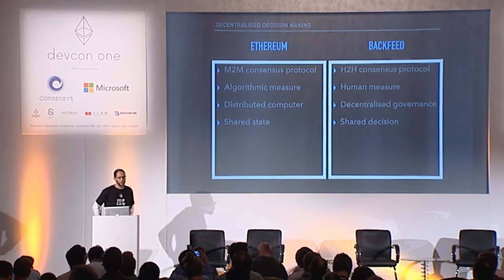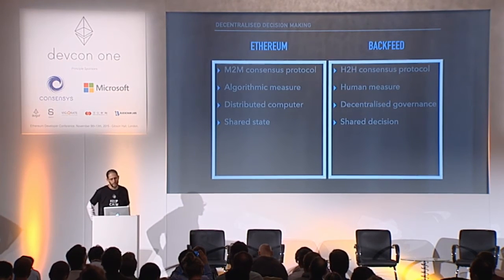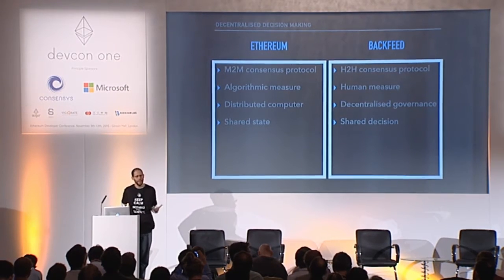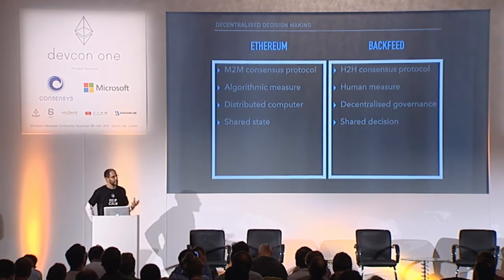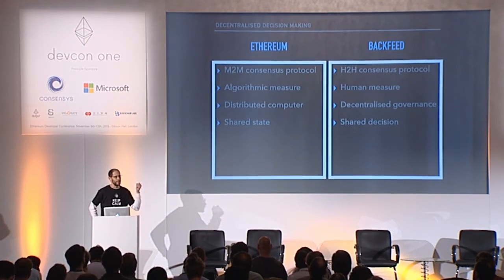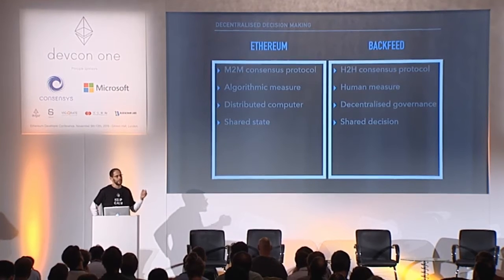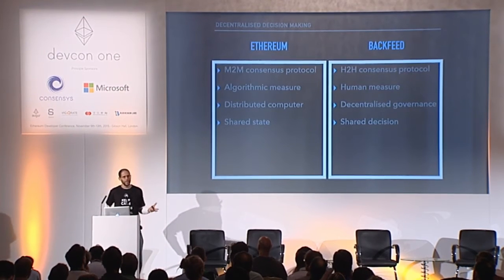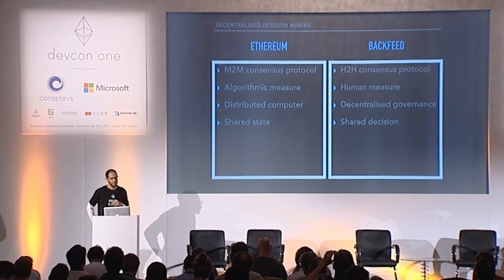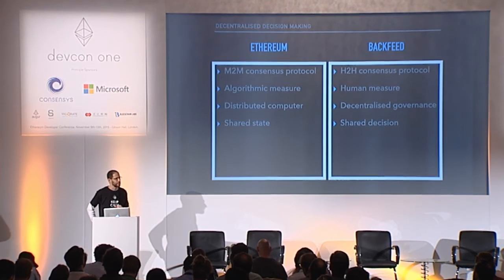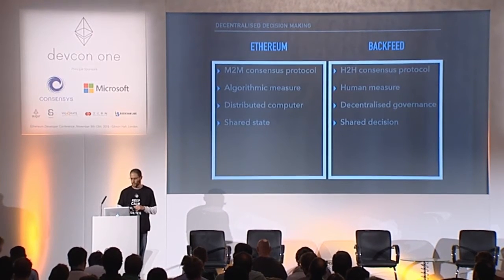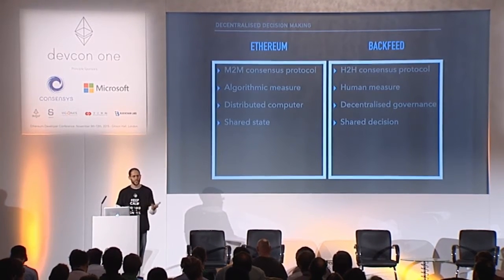With respect to that, the Backfeed protocol is basically a human-to-human consensus protocol. It's a consensus protocol — in a way, from the same family. But now, this consensus is based on and triggered by information that is only quantifiable or measurable by human beings. That makes decentralized governance or decentralized decision-making, and it basically makes a shared decision.